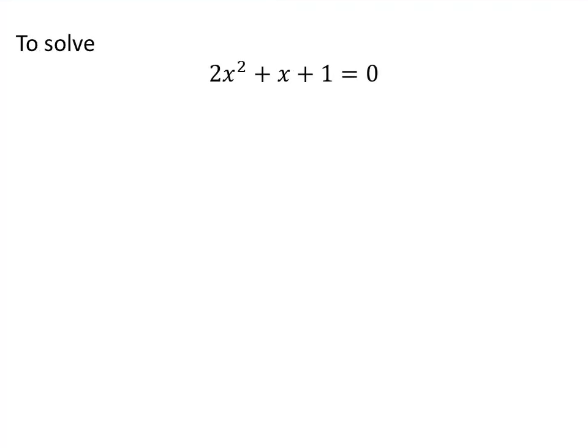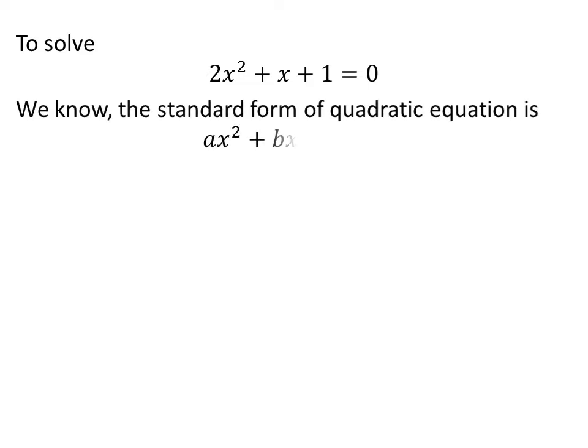The given quadratic equation is 2 times square of x plus x plus 1 is equal to 0. We know the standard form of a quadratic equation is a times square of x plus b times x plus c is equal to 0. Here, a, b and c are constants.